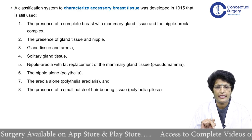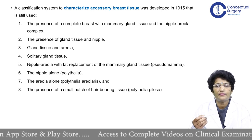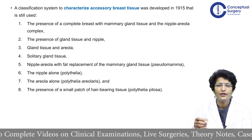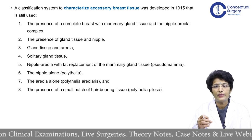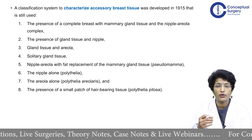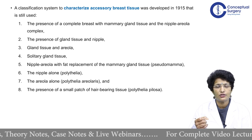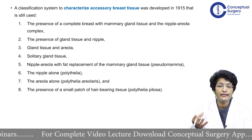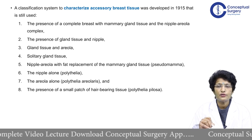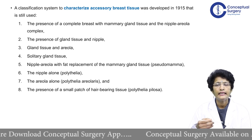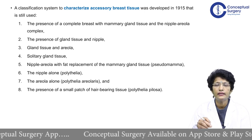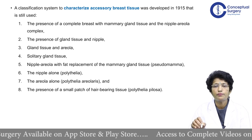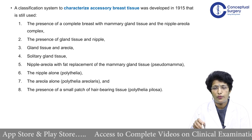It is interesting that we follow a classification system developed in 1915 that continues to be used to date to characterize accessory breast tissue. The categories are: a complete breast with mammary gland tissue and nipple-areola complex; gland tissue with nipple only; gland tissue with areola only; gland tissue alone without nipple or areola; nipple-areola with fat replacement of the mammary gland, known as pseudomamma; nipple alone; areola only — called polythelia areolaris; and a small patch of hair-bearing tissue — polythelia pilosa.